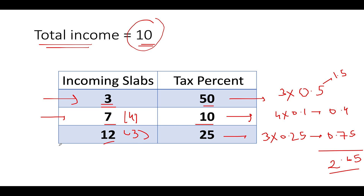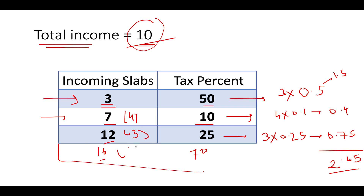If there were more slabs ahead — say at threshold 16 with 70% tax — there would be no contribution because all income has been exhausted. You need to abort as soon as the income threshold is greater than or equal to the total income of the candidate. Keep this in mind as we proceed to the coding section.